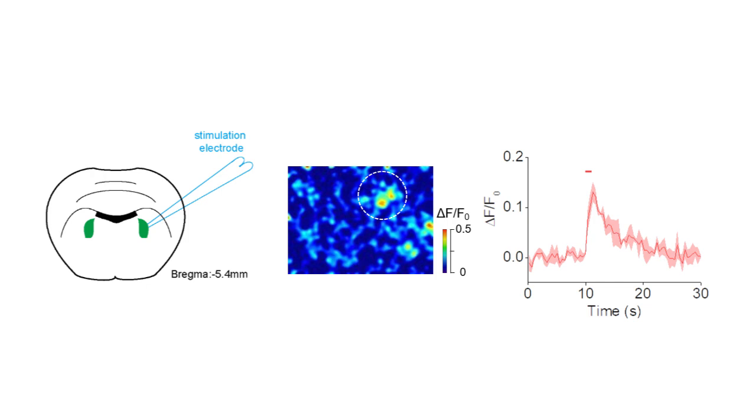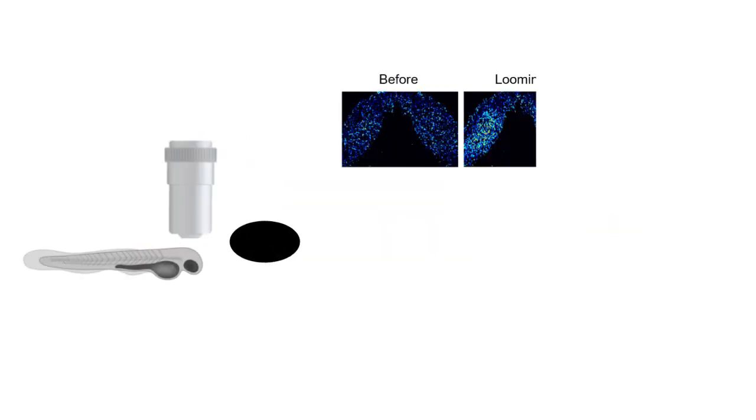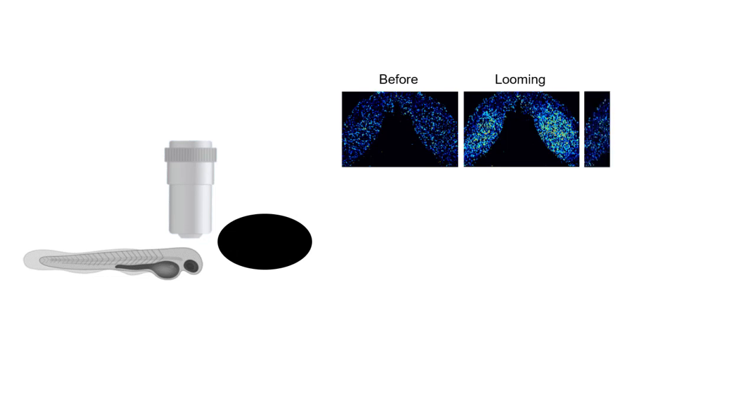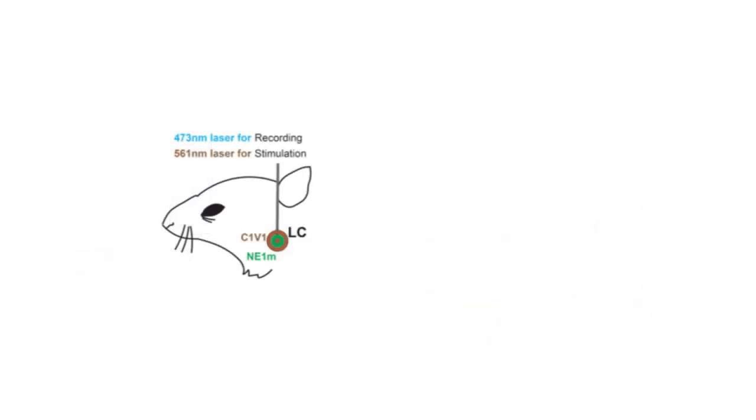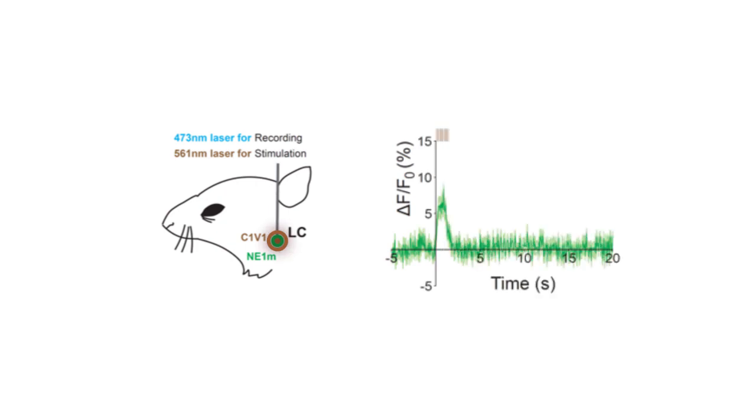We have demonstrated that viral-mediated expression of GRAB-NE sensors were able to detect electrical stimulation-evoked NE release in the locus coeruleus of mouse brain slices. In in vivo experiments, expressions of GRAB-NE sensors were able to detect looming-evoked NE release in the midbrain of live zebrafish, as well as optogenetically-triggered NE release in the LC of freely-moving mice.